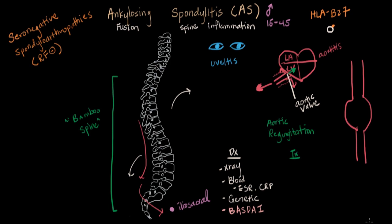Speaking of treatment, managing AS can look a lot like managing rheumatoid arthritis or other autoimmune diseases, because the principle is the same — you need to reduce inflammation. There's a class of drugs grouped together as disease-modifying anti-rheumatic drugs, or DMARDs, because they were originally developed for rheumatoid arthritis. What's special about them is that they actually slow the progression of the disease, not just treat the symptoms. We can use this for AS as well. There's also tumor necrosis factor, which causes inflammation in the body, and TNF inhibitors can be used to reduce the inflammation going around in the body.